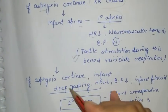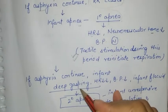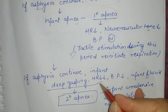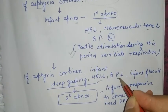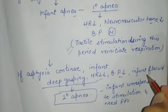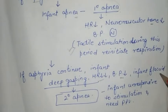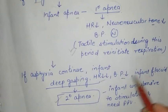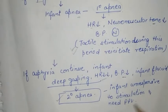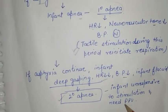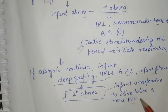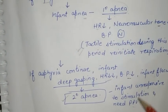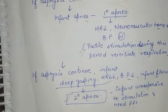If asphyxia continues, the neonate goes into deep gasping, with a very decreased heart rate, decreased blood pressure, and the infant becomes flaccid. This is known as secondary apnea — the infant is unresponsive to stimulation and requires PPV, that is positive pressure ventilation.